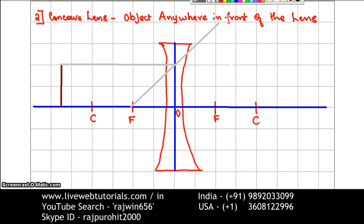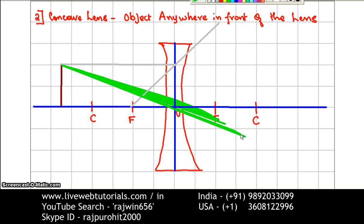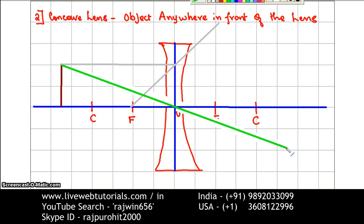The second ray: from this point I am going to join through the optical center. This ray, as it is passing through the optical center, is going to pass without suffering any deviation.